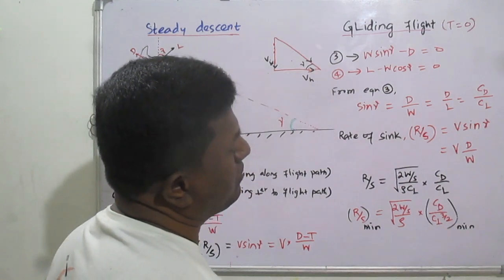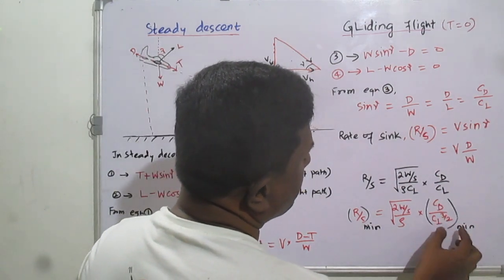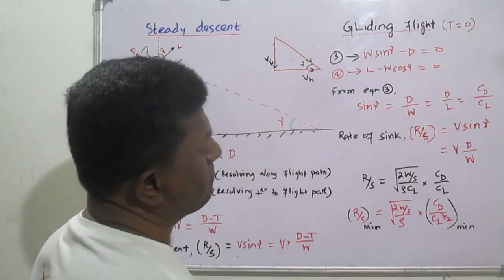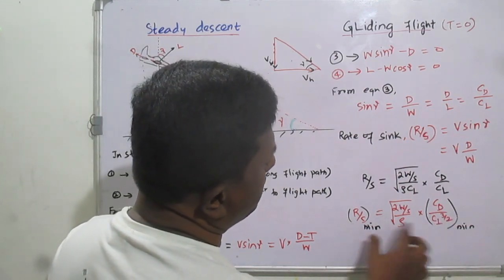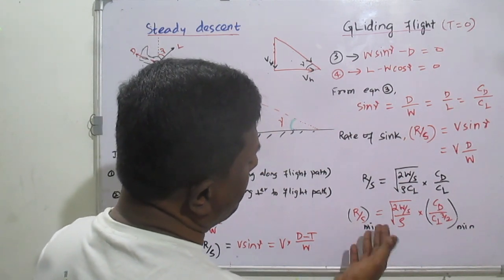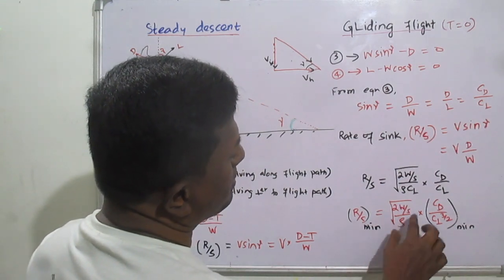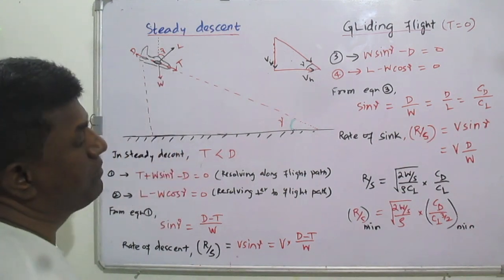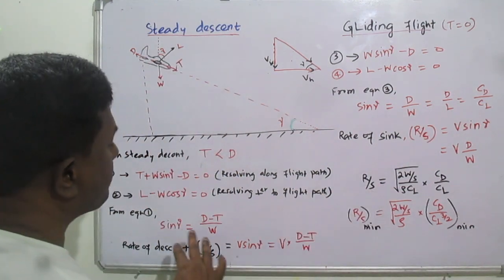If we want to find the minimum rate of sink, then the condition C_D / C_L^(3/2) must be minimized. This is similar to the minimum power conditions. So to obtain minimum rate of sink, we apply minimum power conditions and find the corresponding rate of sink minimum.